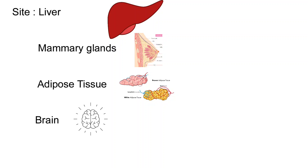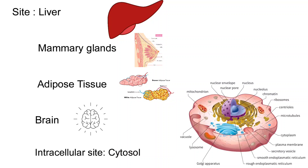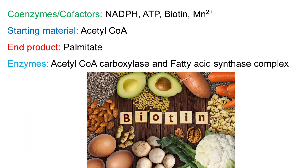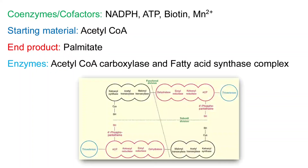Within the cell, the intracellular site is the cytosol, where the enzymes required for fatty acid synthesis are present. The coenzymes or cofactors required are NADPH, ATP, and biotin. The starting material is acetyl-CoA and the end product is palmitate, or palmitic acid.